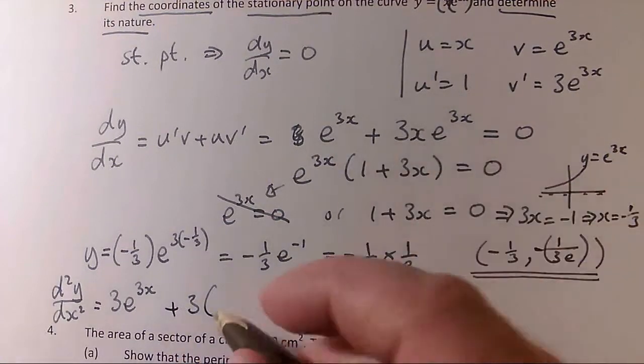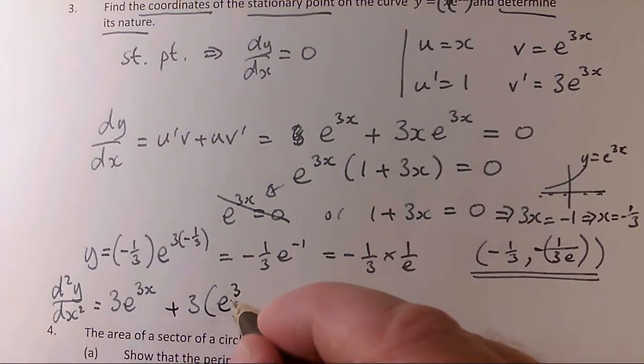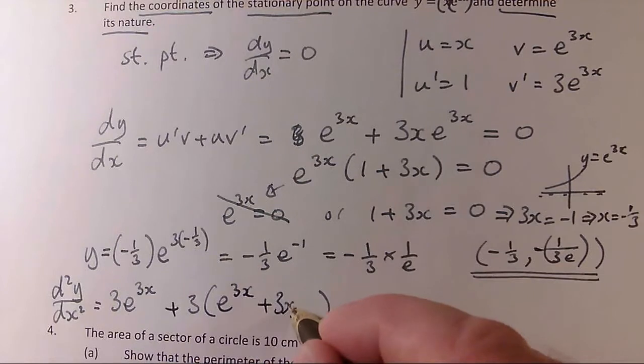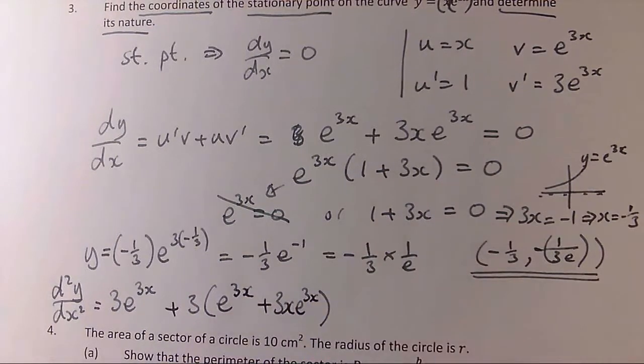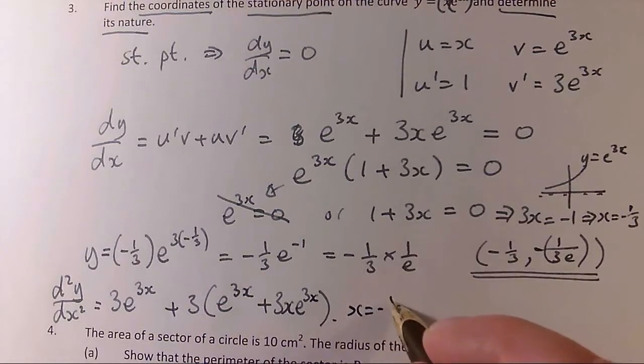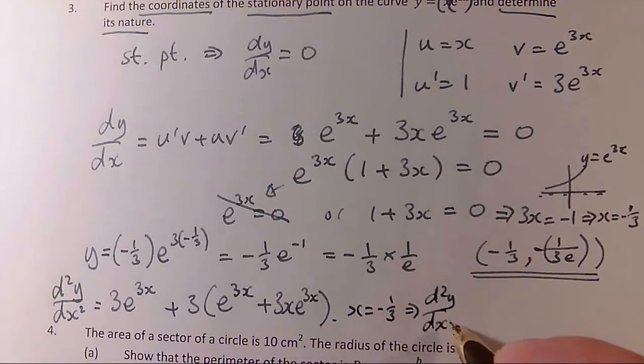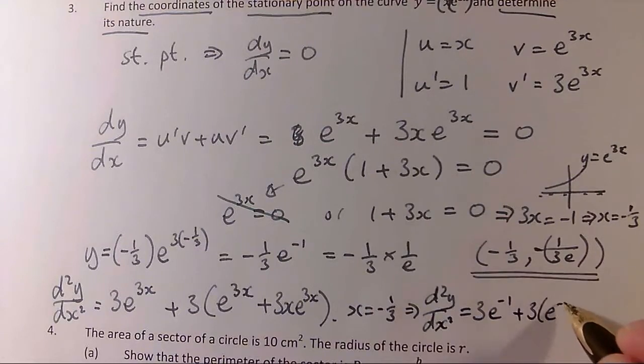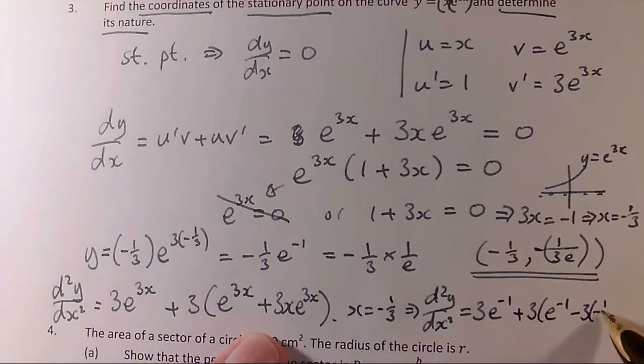So the second part of d2y by dx squared is going to be 3 times the bracket. And then the contents of the bracket are going to be this expression here, e to the 3x plus 3xe to the 3x. And I've got to check out what kind of value I get for this when x is minus a third. So x equals minus one third. So I'm doing d2y by dx squared for that. So I'm going to get 3e to the power of 3 times minus a third is minus 1 plus 3 times e to the power of minus 1 minus 3 times minus a third times e to the power of minus 1.